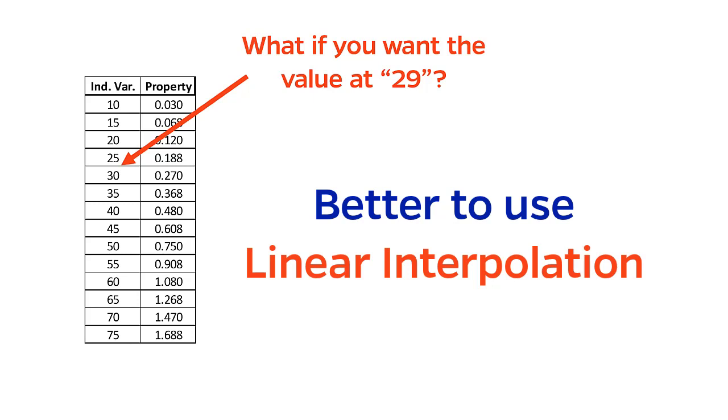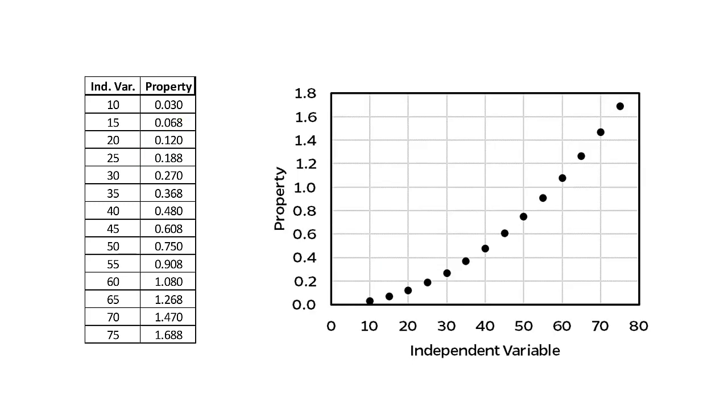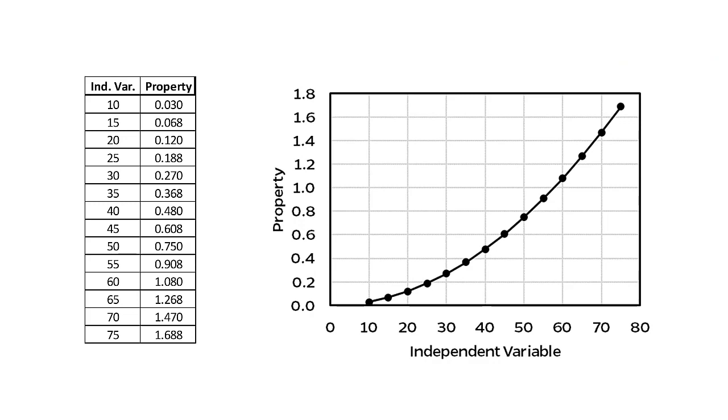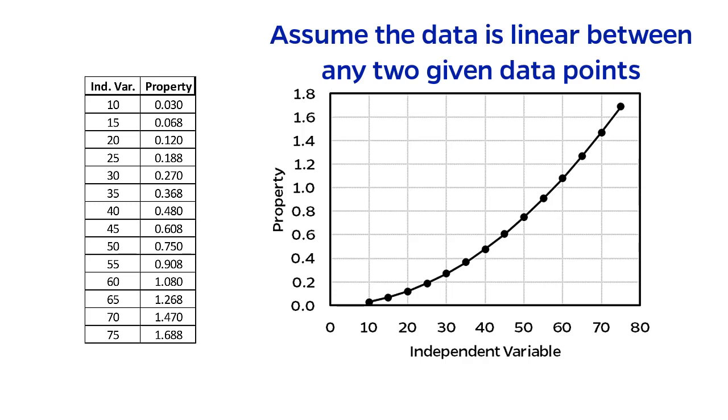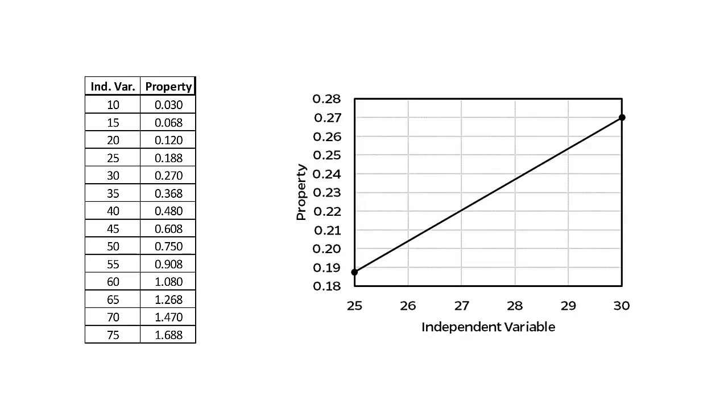If I were to plot this data, notice that it is very clearly non-linear. However, if I connect all the data points with straight lines, the overall plot still looks right. This is the basic idea behind linear interpolation, assuming that the data is linear between given data points, even if the overall data is non-linear. Now if I zoom in between 25 and 30, I can read the value at my desired independent variable value of 29. To me, it looks to be just above 0.25.